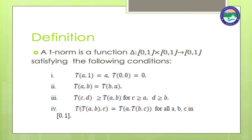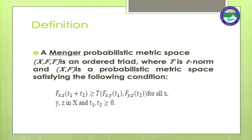Next is t-norm. A t-norm is a function Δ: [0,1] × [0,1] → [0,1] satisfying: (1) T(a, 1) = a; T(0, 0) = 0; (2) T(a, b) = T(b, a); (3) T(c, d) ≥ T(a, b) for c ≥ a, d ≥ b; (4) T(a, T(b, c)) = T(T(a, b), c) for all a, b, c in [0, 1]. Next is Menger probabilistic space. (x, F, T) is an ordered triad where T is a t-norm and (x, F) is a probabilistic metric space satisfying: F_{xz}(t₁ + t₂) ≥ T(F_{xy}(t₁), F_{yz}(t₂)) for all x, y, z in x and t₁, t₂ ≥ 0.